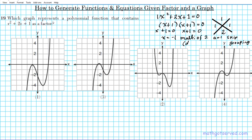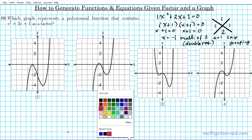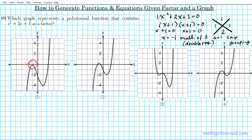This is known as a double root. Whenever you have a double root, visually it tells you that a vertex will be touching the x-axis at that particular value. In option one, we have a double root because the vertex is touching the x-axis right there. In option two, we also have a double root. So we can narrow down your options just based on that. Now let's look at the graphs and see which one has a double root of negative one.